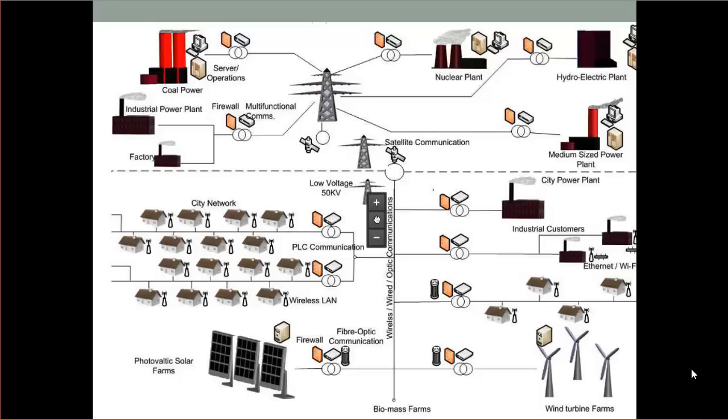They learned through trial and error how to make these things work and got a little more complicated. By the early 1900s, by about the 1920s, they were starting to interconnect electric grids.